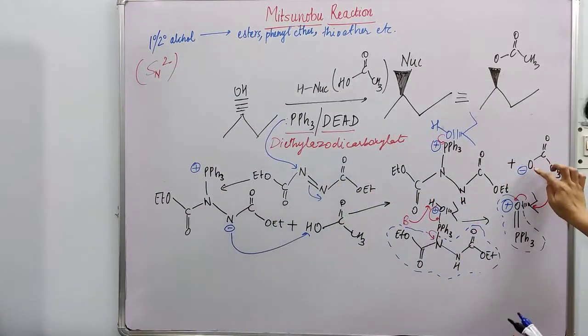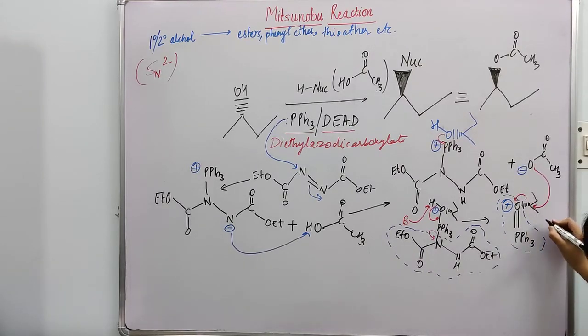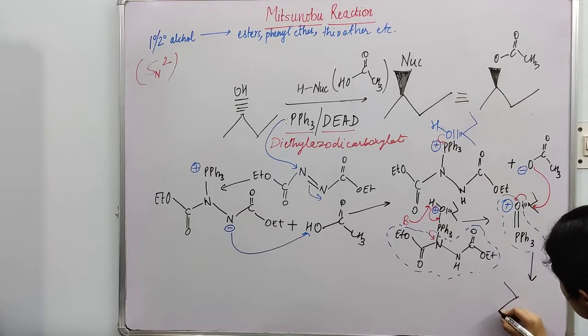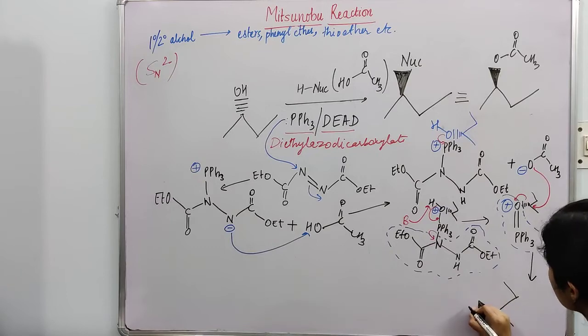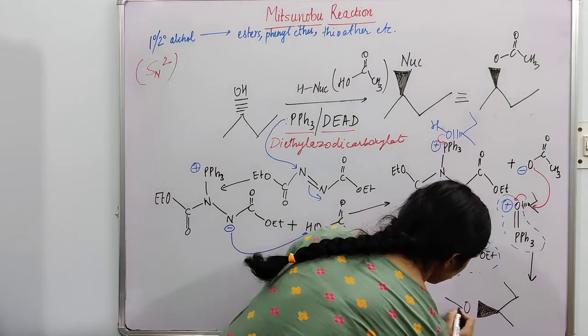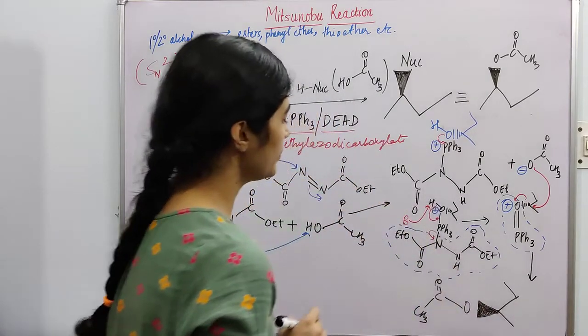And what you will get, because this acetate group is attacking from behind and it is an SN2 mechanism, so you will have inversion of your configuration. So the product formed here will be, with a solid bond, and you will have oxygen attached to carbonyl, and then you will have methyl.